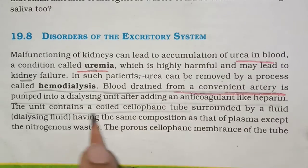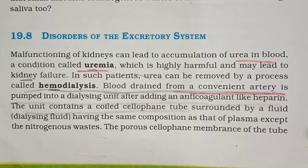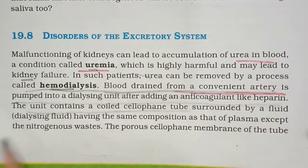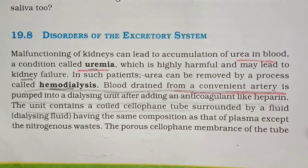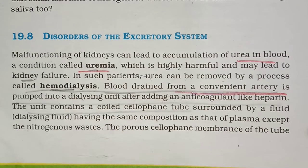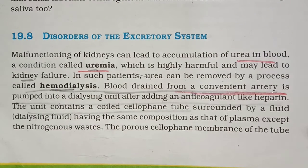Urea can be removed from the blood, but if the kidney is not able to remove it, that process is called hemodialysis — meaning dialysis of the blood. When does it happen? If the kidney is not functioning properly or not purifying the blood, urea accumulates, and then hemodialysis is performed.